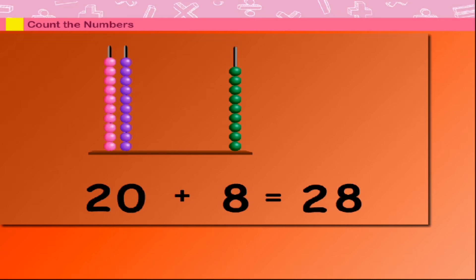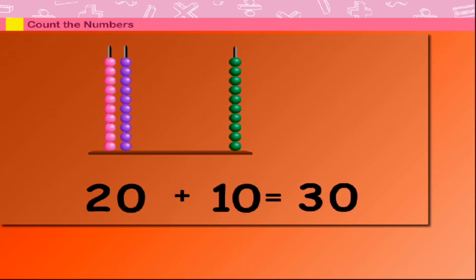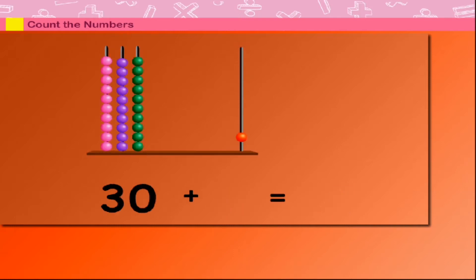20 plus 9 is equal to 29. 20 plus 10 is equal to 30.